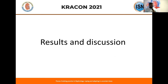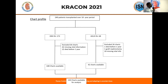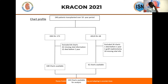Looking at the results: we reviewed 240 patients transplanted over a 10-year period at two centers. Due to missing vital information and patients who died before one year, we were able to retrieve 108 charts from Kenyatta and 42 charts from Aga Khan, giving us 150 charts for analysis.